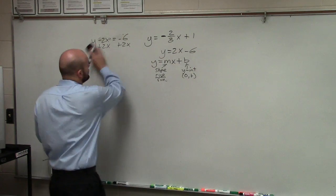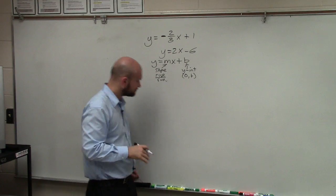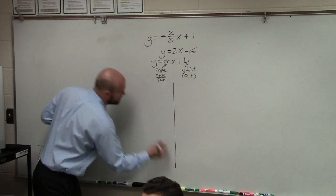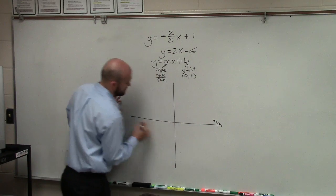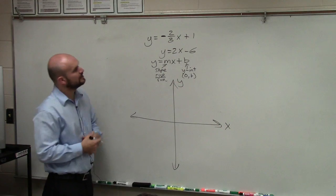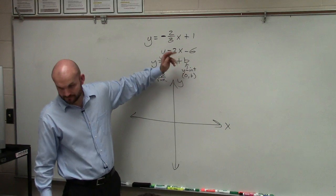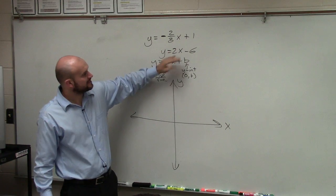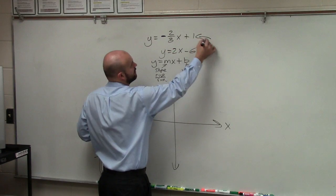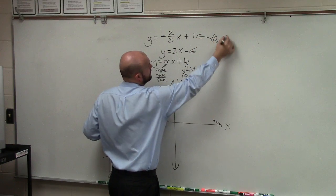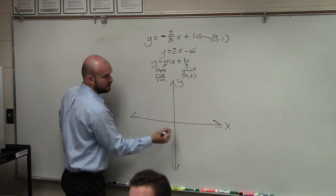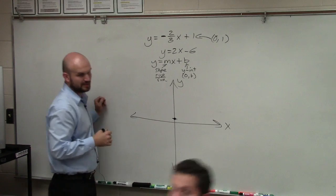So now let's get into how to graph these. Basically, what we're going to do is we have an x and a y-axis. I have extra graph paper if you guys need it. But here's your y-axis. Here's your x-axis. And basically what we're going to do is plot the y-intercept first. So here is my y-intercept, which is 0 comma 1. So I go 0 on the x-axis, 1 on the y-axis. I plot the points.